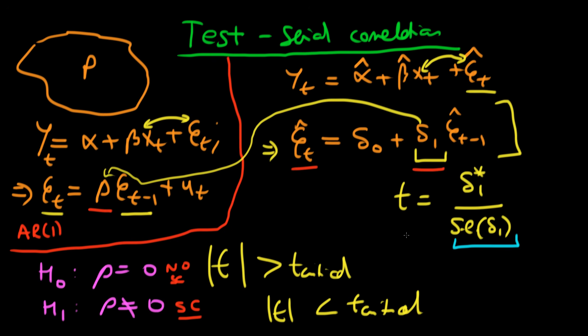All is not lost - we can still test for the presence of serial correlation in the presence of heteroscedastic errors, but we need to use some robust form of our t-statistic.